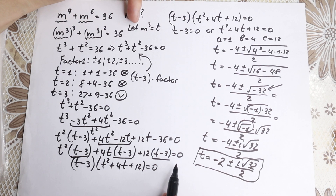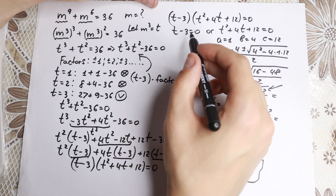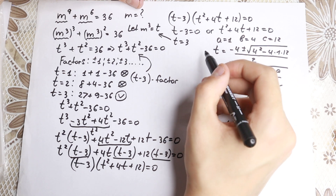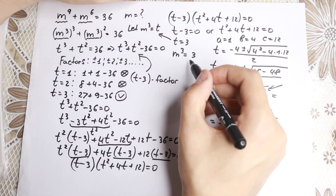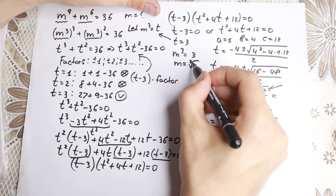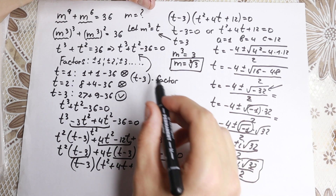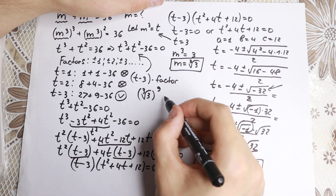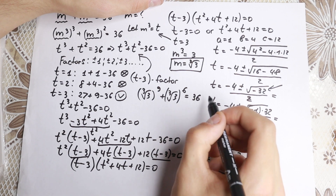Since we're interested in real number roots, we go back to t minus 3 equals zero, giving t equals 3. Going to our substitution: m-cubed equals t, and t equals 3, so m-cubed equals 3. Taking the cube root of both sides: m equals the cube root of 3. Let's verify this answer — we have the cube root of 3 raised to the ninth power plus the cube root of 3 raised to the sixth power.